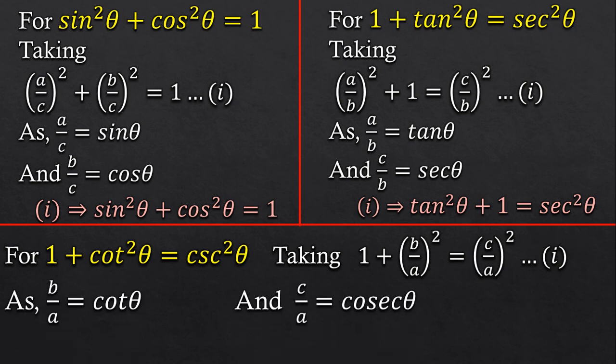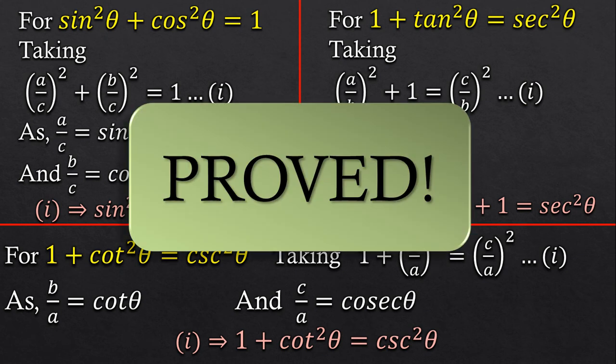And lastly, as b by a equals to cot theta and c by a is equal to cosecant theta, we got 1 plus cot square theta equals to cosecant square theta. Hence, proved.